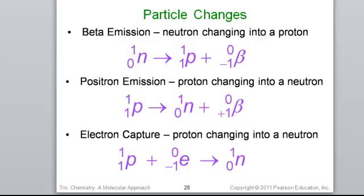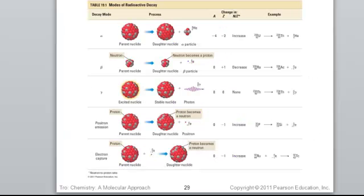Notice the top two, beta and positron, are decays, decomposition reaction pattern. But the electron capture would follow a combination pattern. Combining two things is that process.